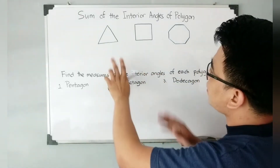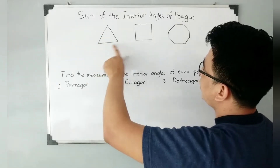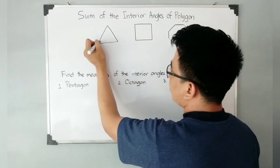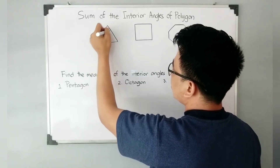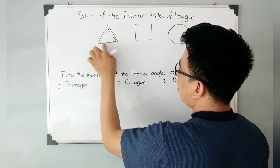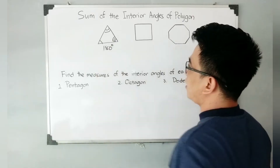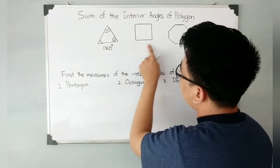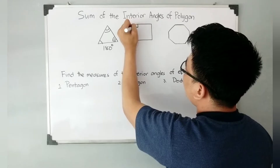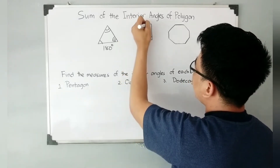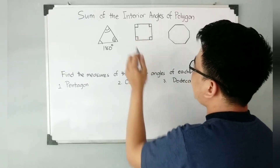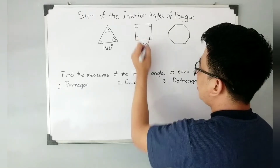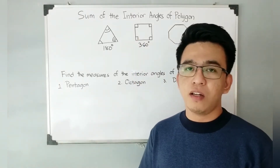I have here three different polygons. We have here a triangle, a square, and another polygon. We know that the sum of the interior angles of a triangle is equal to 180 degrees. And if you have a square, we know that we have four right angles. So if we multiply 90 degrees by 4, that will give you 360 degrees as the sum of the interior angles of the square.